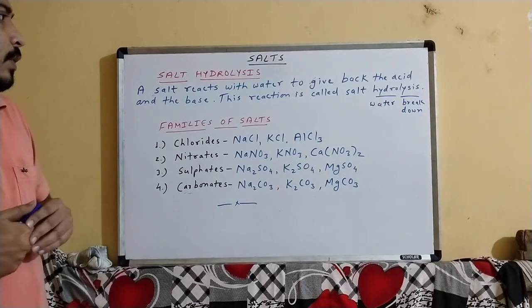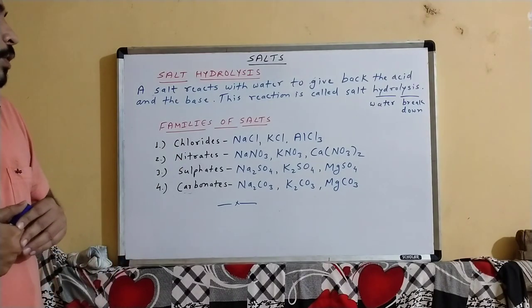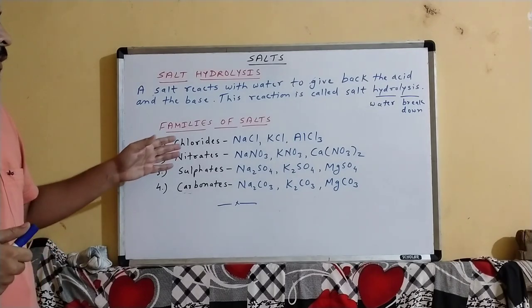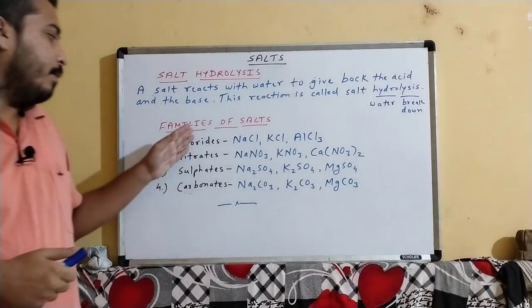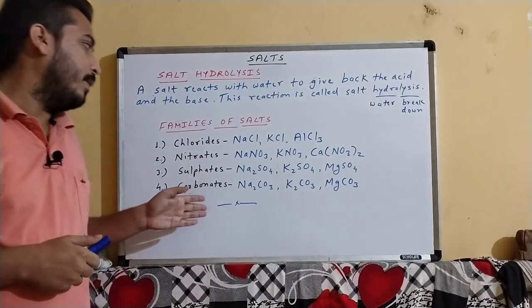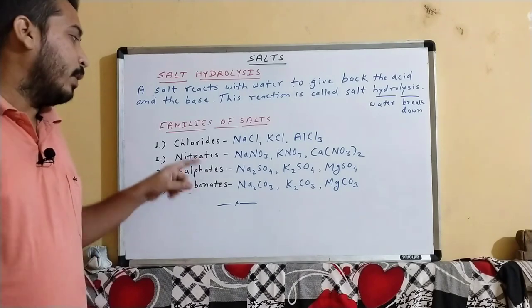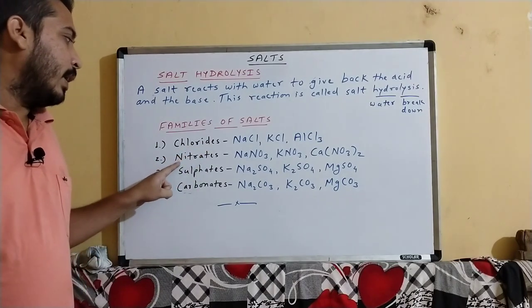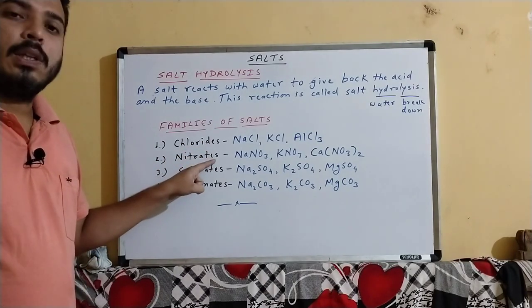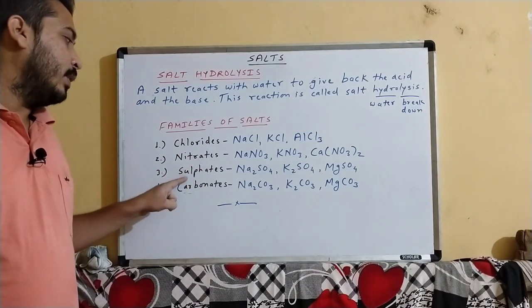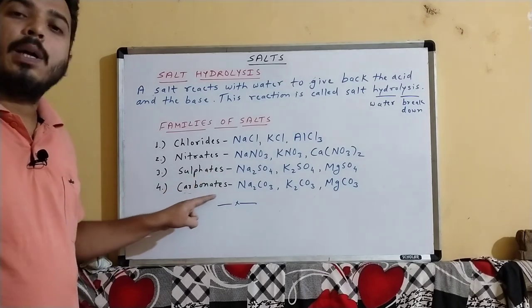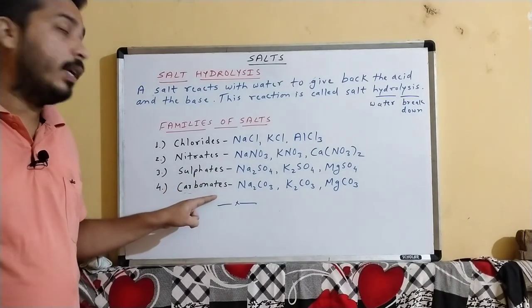Next is families of salt. Salts are classified into four different families: chloride salts, nitrate salts, sulfate salts, and carbonate salts.